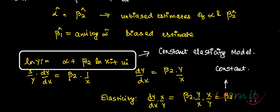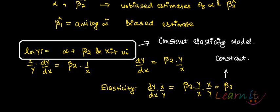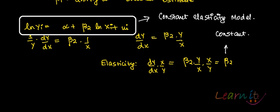So how do you interpret this kind of model? The interpretation is very important. Suppose you have the model: log of y equals alpha plus beta 2 log of x plus u_i. How do you measure or interpret it?